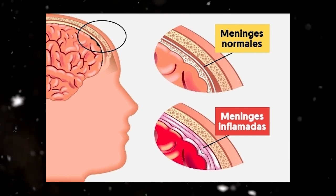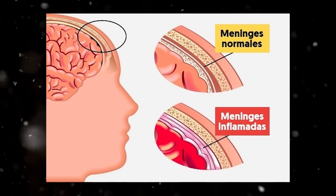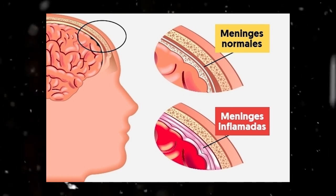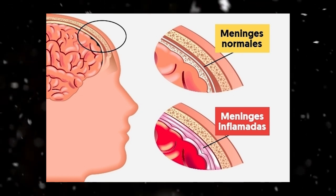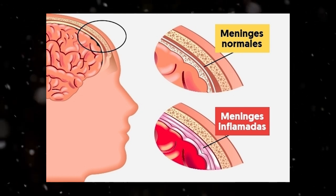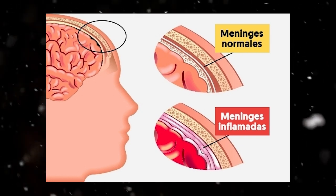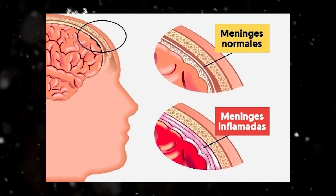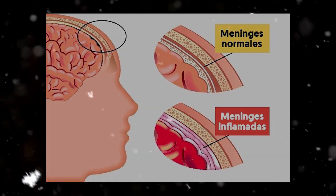As more white blood cells flood into the fluid, the levels of glucose will plummet. Levels can increase as much as 20 or 30 times higher than the normal white blood cell count. Meningitis is therefore best simplified by the higher than normal presence of white blood cells in the cerebrospinal fluid.